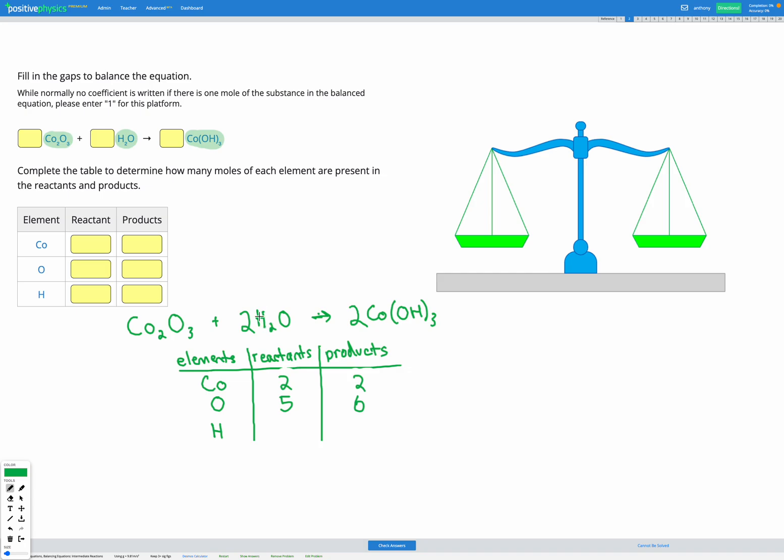Now for the H, I've got two here with the H2. And I've got a coefficient two. So two times two is four. And on the right, I've got H with the subscript three. And I've got two sets of it. So that's six H's on the right. OK. So we're getting closer.